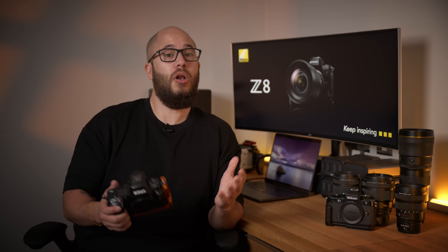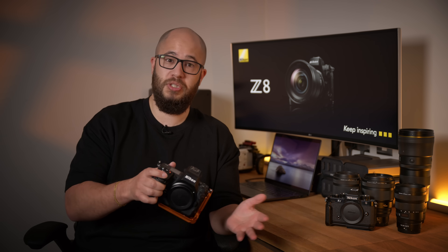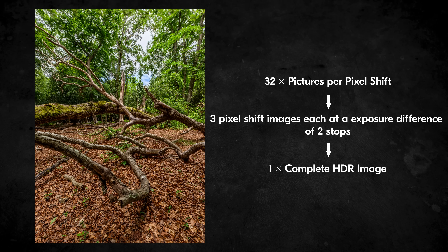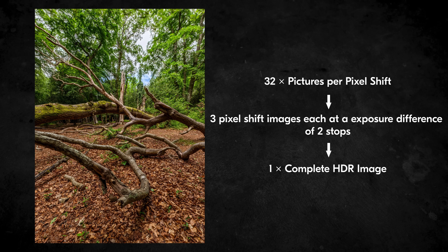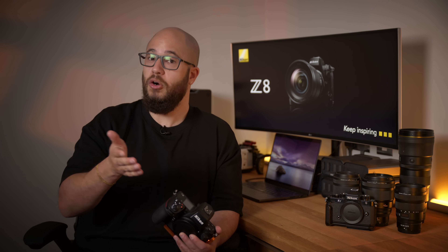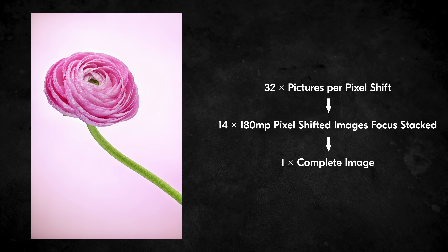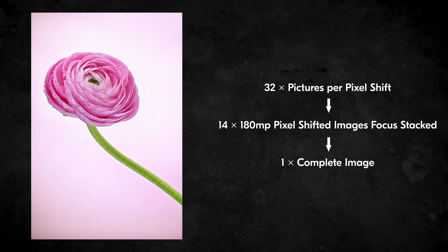Pixel shift has had some new additions, meaning you'll be able to use pixel shift alongside auto exposure bracketing and focus shift shooting. This means you can shoot a pixel shift image with different exposures, covering the whole high dynamic range of the scene so you don't lose a highlight or a shadow. When it comes to focus shift shooting, you can combine those images to create a fully focused, stacked pixel shift image — giving you higher resolution and sharpness from front to back.